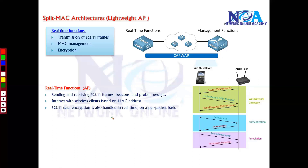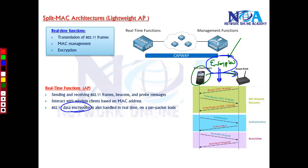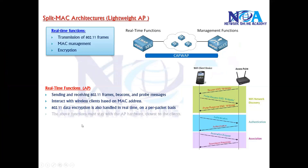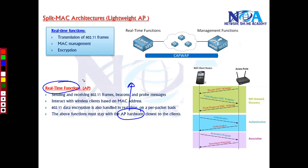If there is any encryption support, the access point handles it, because most wireless traffic must be encrypted. If an attacker connects to the network, they can capture traffic, so current wireless products encrypt data. This encryption is handled by the access point. All these real-time functions must stay inside the access point and must be handled very close to the clients — and the closest device to the client is the access point.